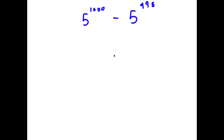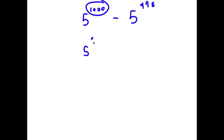In this problem, I have 5 to the power of 1000 minus 5 to the power of 998. To solve this, I'm going to first rewrite 1000 as 998 plus 2.